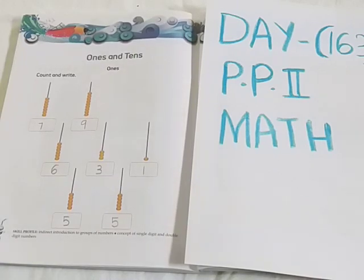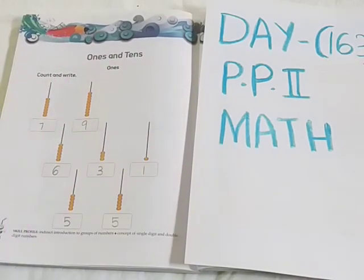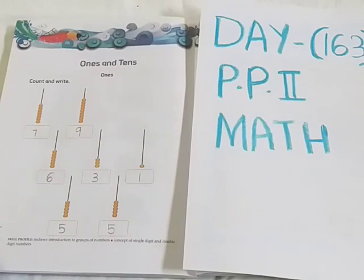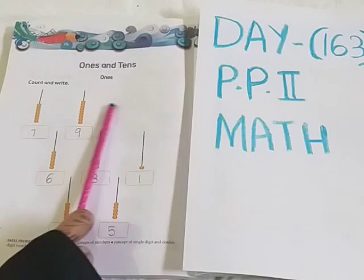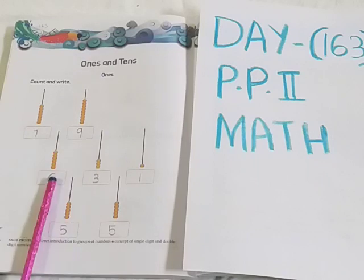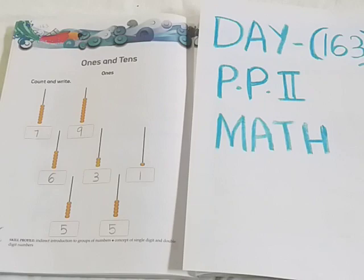So here children, today we have learnt only Ones. In the next video we will learn Tens — for which number we will call as Tens, we will learn in the next class. A single digit number will come under the column of Ones. I hope you have understood which numbers we call as Ones. For Tens, we will see in the next video. Thank you.